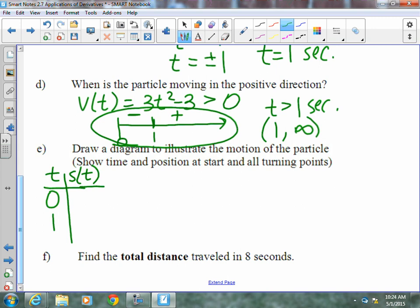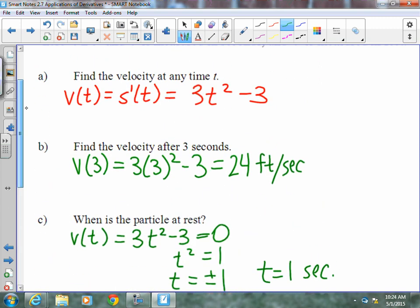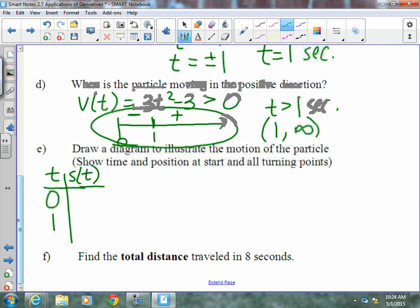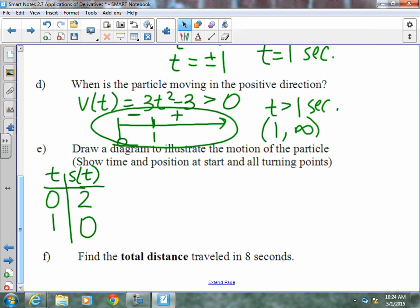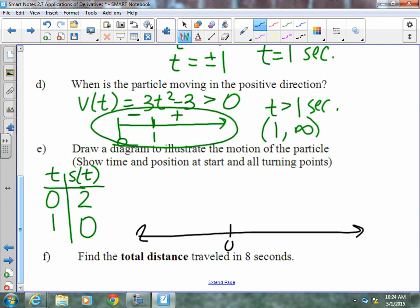So, at zero, we plug it into the original to figure out where it was. If we plug that into t³ - 3t + 2, we get 2. When we plug 1 into that same equation, we get 0. Let's talk about this path, and typically they use a number line, put a 0 on it somewhere, and we kind of label our time as we go.